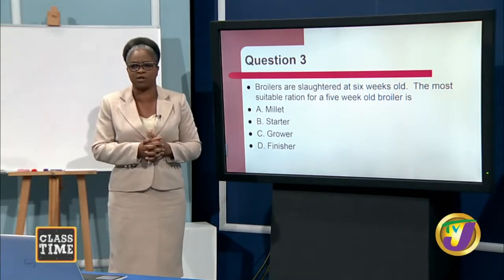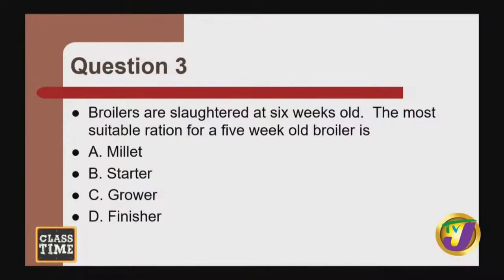Past paper question: 'Broilers are slaughtered at six weeks old. The most suitable ration for a five-week-old broiler is: A, millet; B, starter; C, grower; D, finisher.' Based on what we discussed, the answer is B — starter — because we are taking out our chickens at six weeks old.